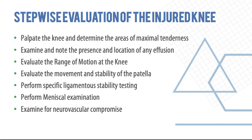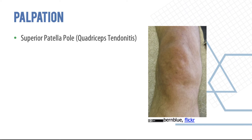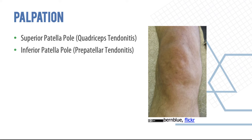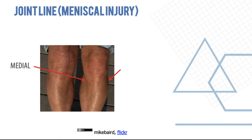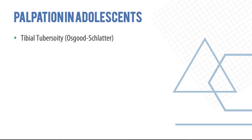If there is any doubt about neurovascular compromise, contact your senior immediately and arrange a diagnostic test — whether ultrasound Doppler or CT angiography. You should palpate the superior pole of the patella for quadriceps tendon ruptures or tendonitis, the inferior patellar pole for pre-patellar tendonitis, and the anterior pole for bursitis. Joint line tenderness is very important: tenderness on the medial joint line may indicate a medial meniscal tear; tenderness on the lateral joint line may indicate a lateral meniscal tear or fracture.